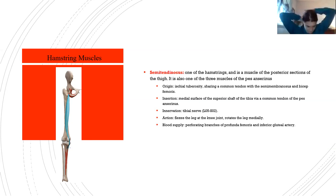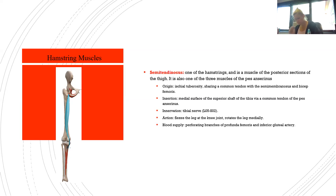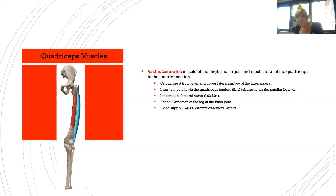The semitendinosus is one of the hamstrings and also one of the three muscles of the pes anserinus — meaning 'goose foot' — referring to the conjoint tendons inserting into the anteromedial surface of the proximal tibia. Origin: ischial tuberosity, sharing a common tendon with semimembranosus and biceps femoris. Insertion: medial surface of the superior shaft of the tibia via the pes anserinus. Innervation: tibial nerve L5–S2. Action: flexes and medially rotates the leg at the knee. Blood supply: perforating branches of profunda femoris and inferior gluteal artery.